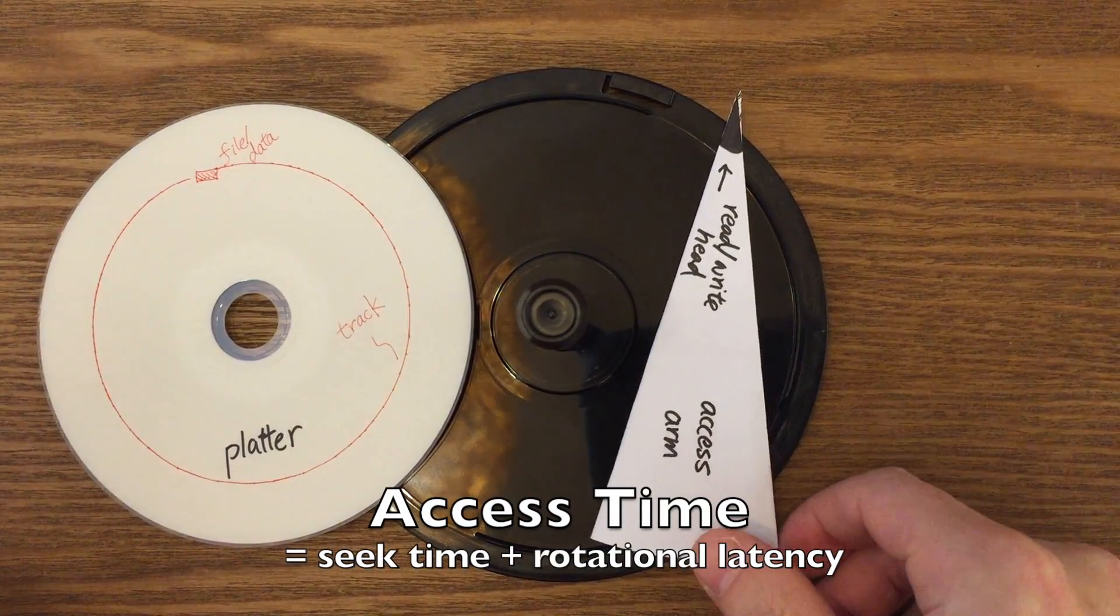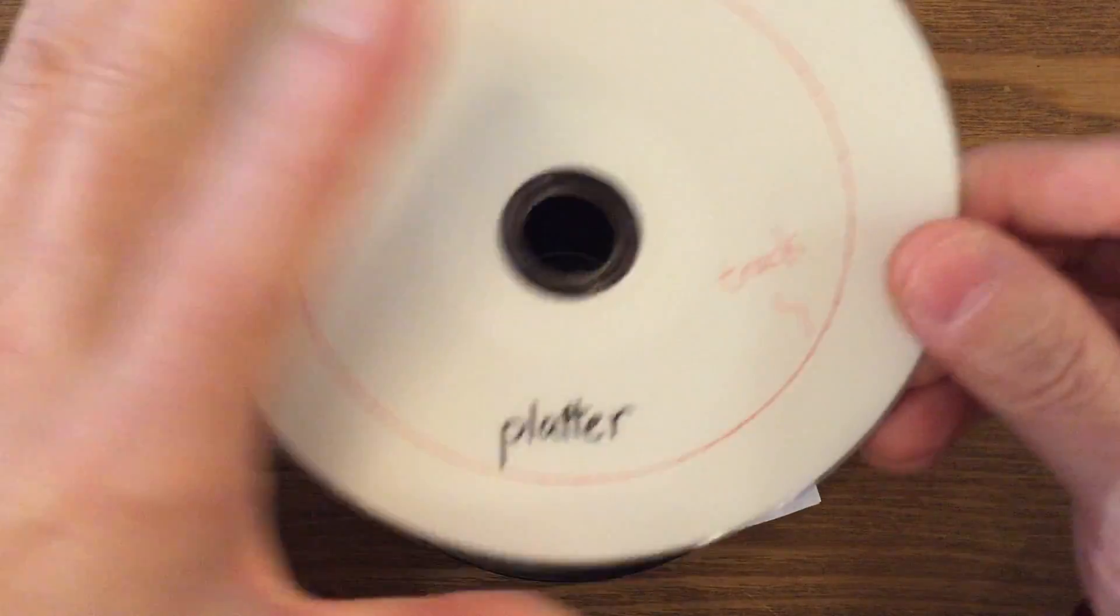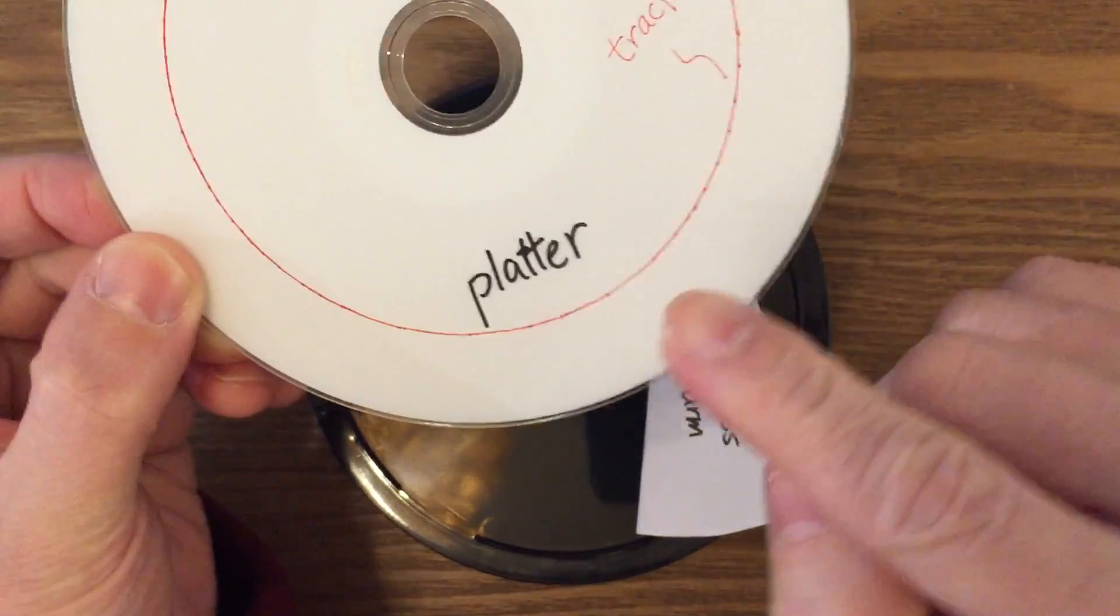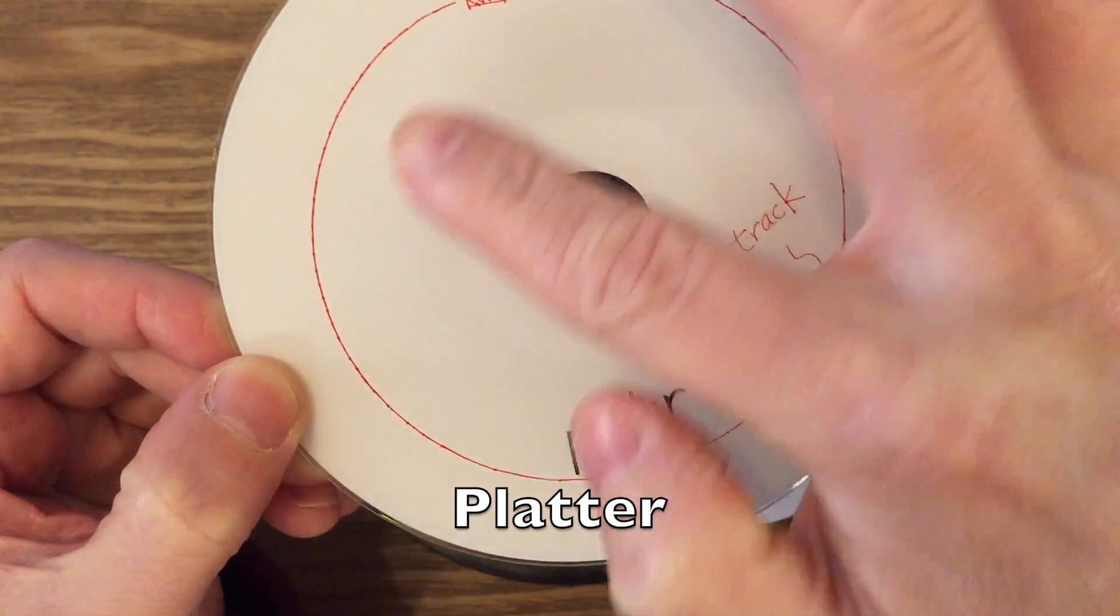Hello students, we are going to explain the concept of access time in hard disk. Let's say this is a platter of a hard disk and the data are stored on the surface of the platter.